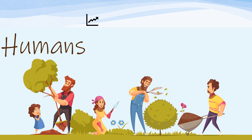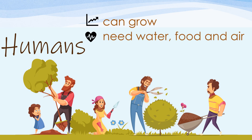Humans can grow from a baby — they can grow bigger and taller to become an adult. Humans need water, food, and air. Humans need to drink water if they are thirsty; they need to eat food if they are hungry, and they need air to breathe.